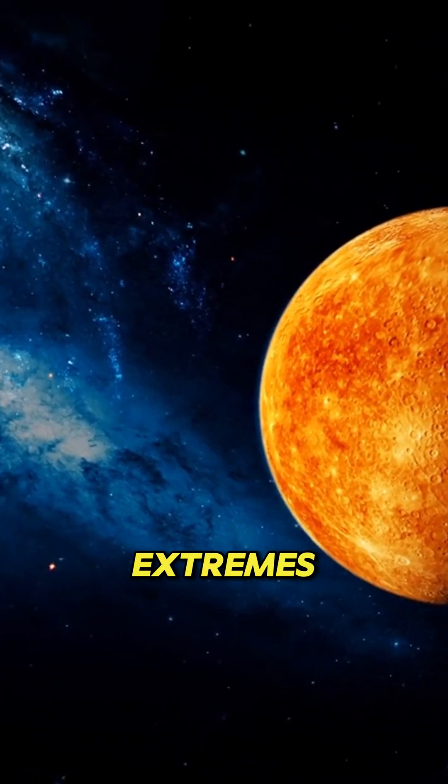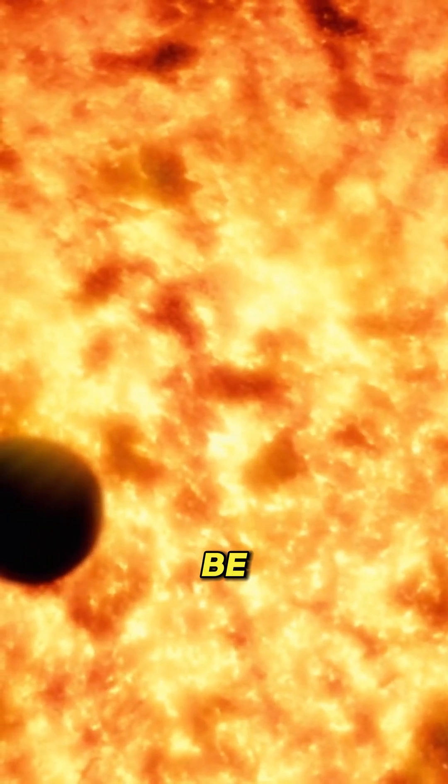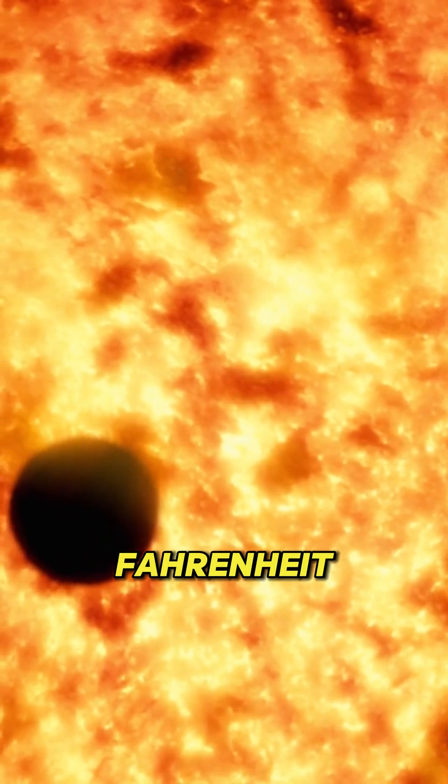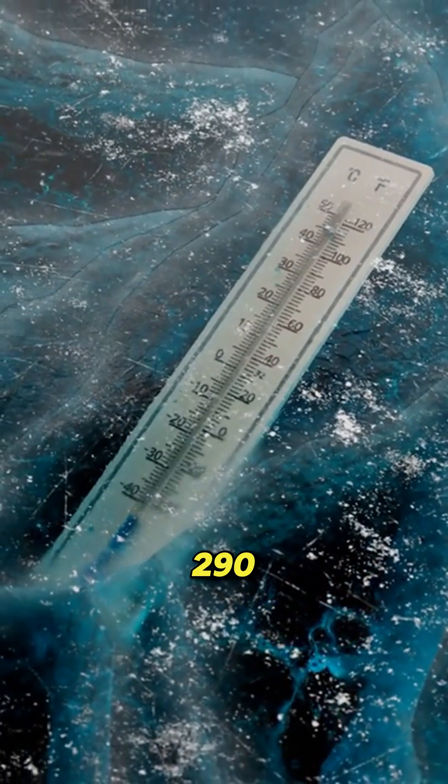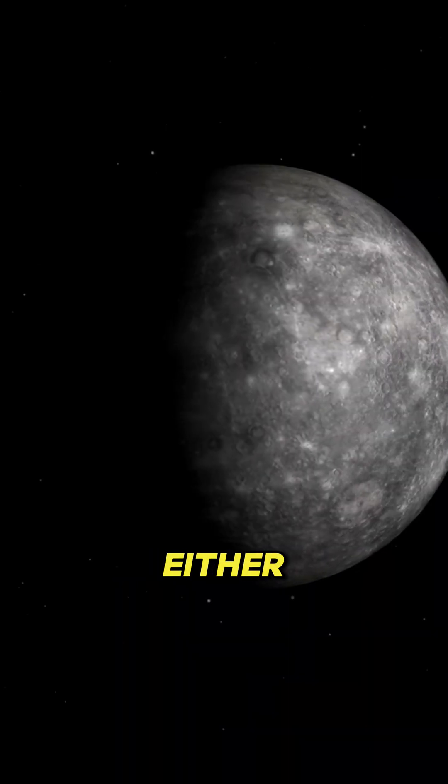Now Mercury is a planet of extremes. On the sunlit side, you'd be cooked alive at 800 degrees Fahrenheit. But if you tried to escape to the dark side, you'd freeze at minus 290 degrees Fahrenheit. Either way, you're doomed.